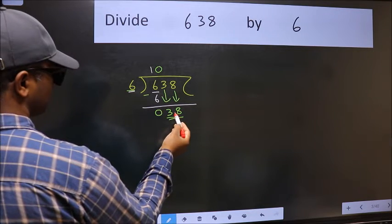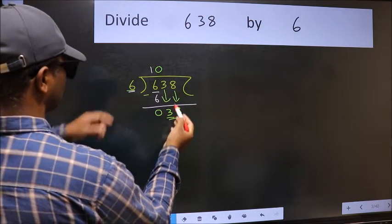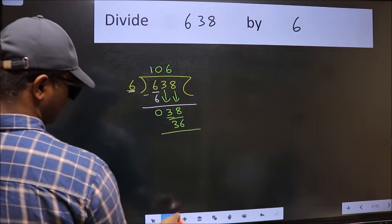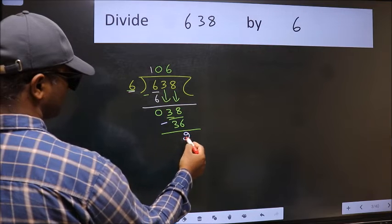Now 38. A number close to 38 in the 6 table is 6, 6, 36. Now we should subtract. We get 2.